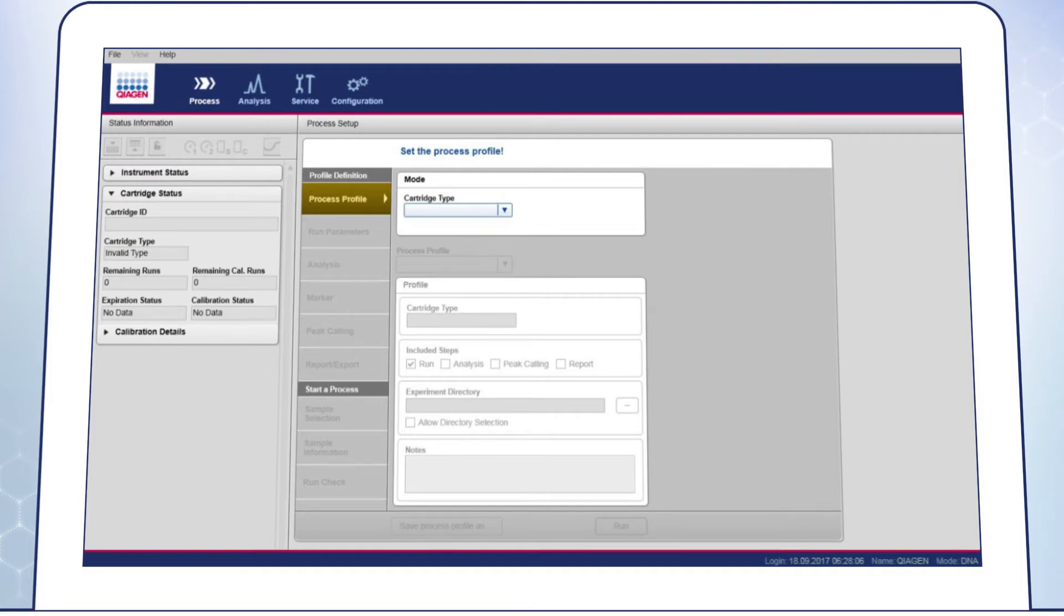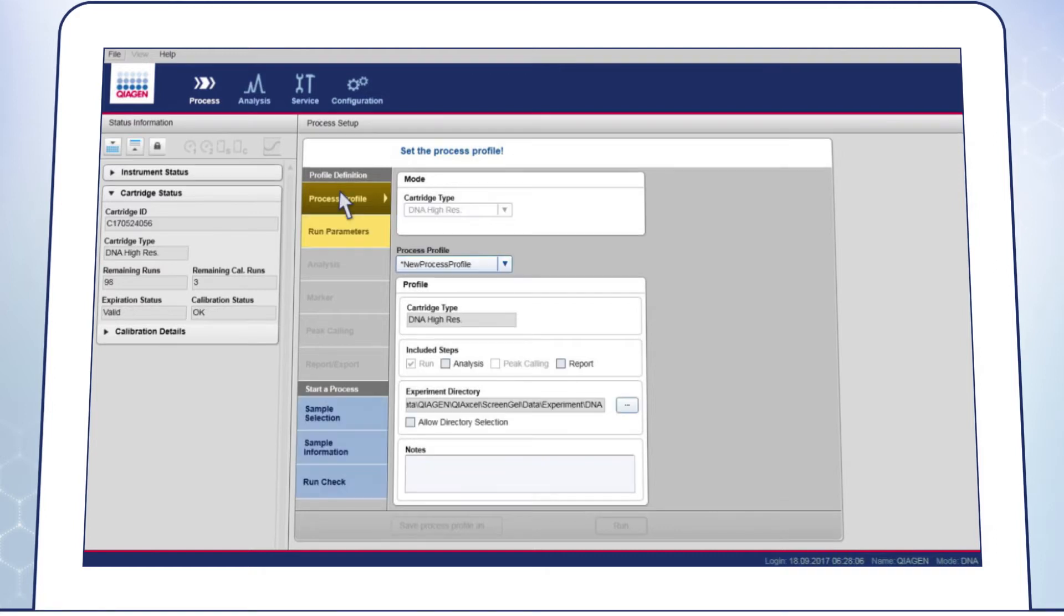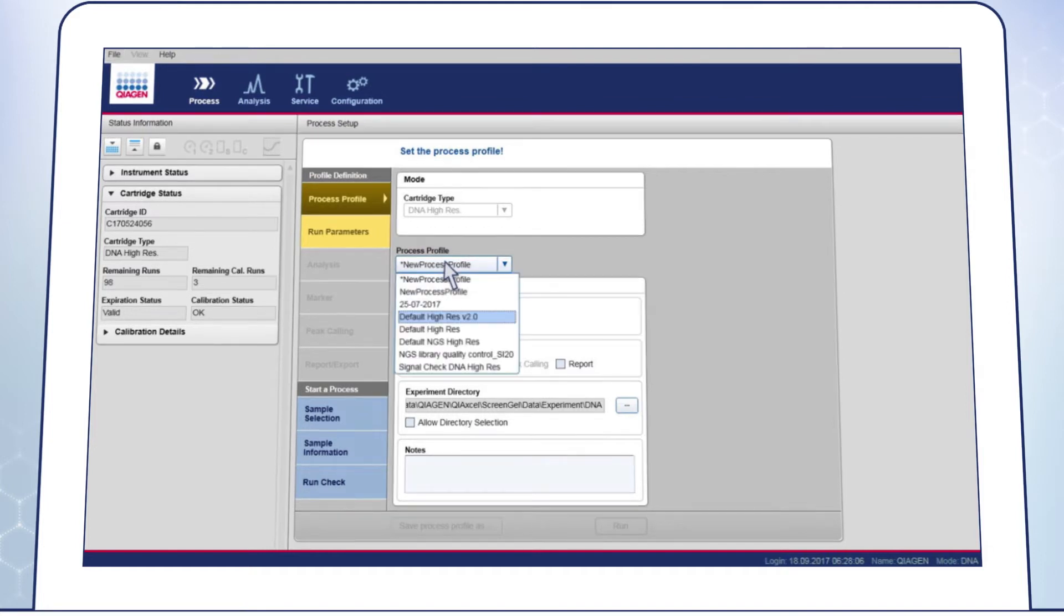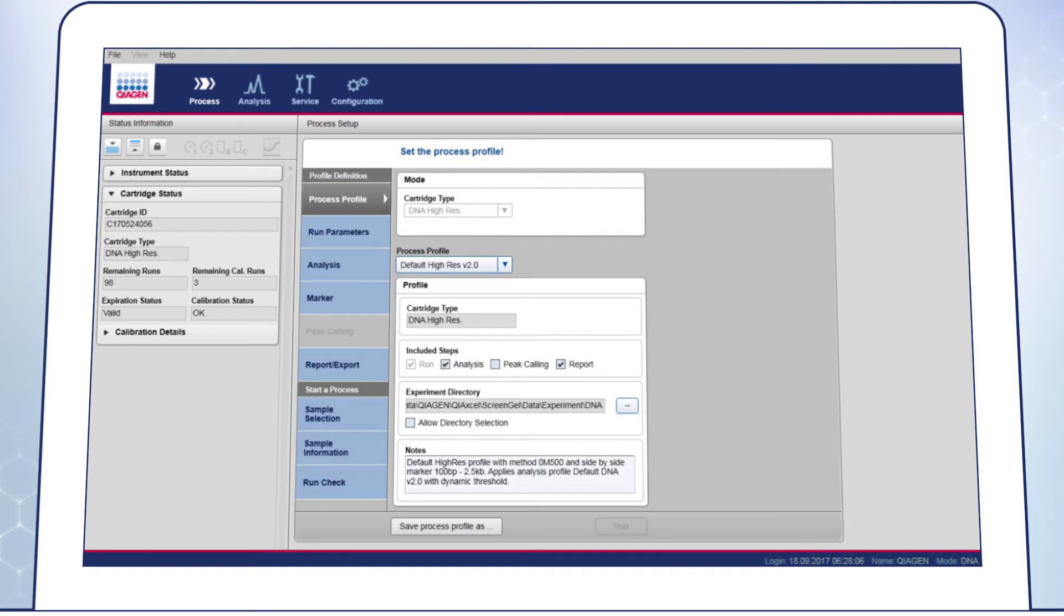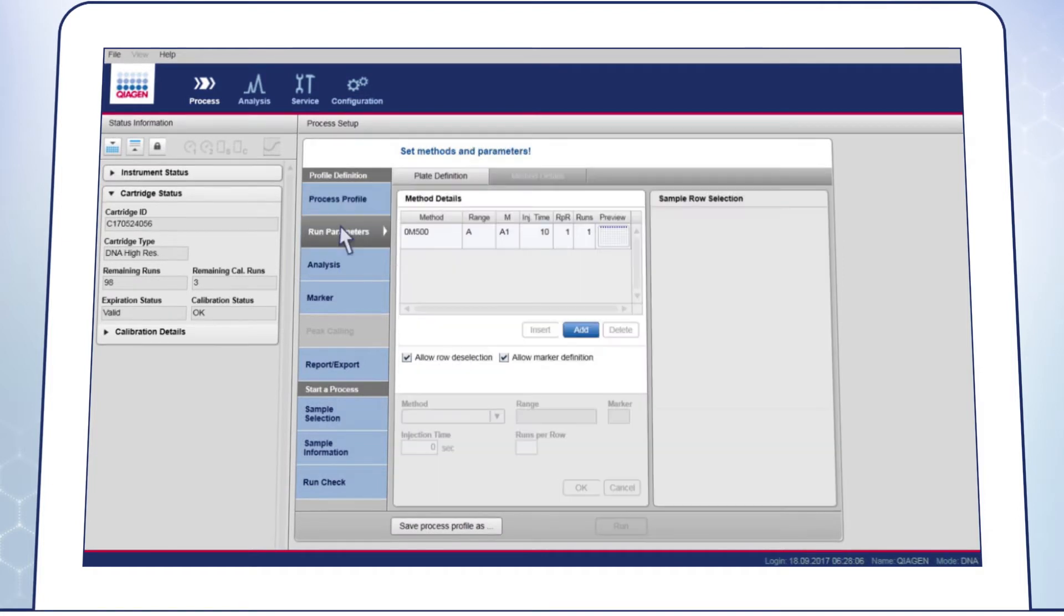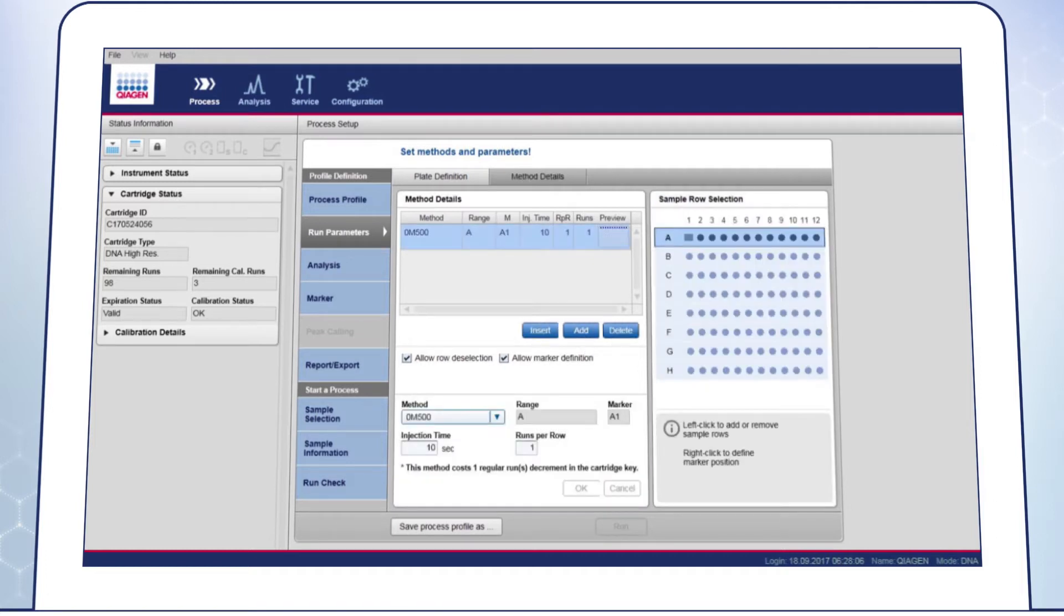Go to the Process Environment and enter the required settings in the Process Profile. Under Profile Definition, select the Process Profile to determine the parameters of the run. You can select a default profile or create a customized Process Profile. On the Run Parameters screen, add the method to be used and select the sample rows to be analyzed. To define the size marker, right-click on the appropriate position.